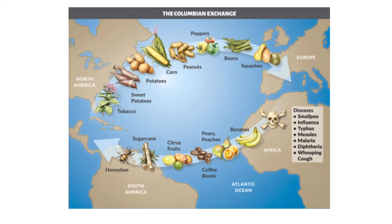In the Columbian Exchange, animals and plants also traveled from the Americas to Europe and Africa. Explorers returned to Europe with exotic foods such as turkeys, peppers, corn, tomatoes, potatoes, beans, and squashes. Many of these foods eventually became a regular part of European diets. Other imports were considered luxuries because they were rare — with low supply and high demand, they were expensive — including tobacco, vanilla, and cacao beans. Vanilla was used for flavoring and cacao beans were used to make chocolate drinks.